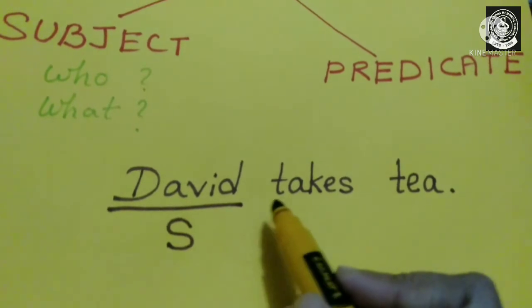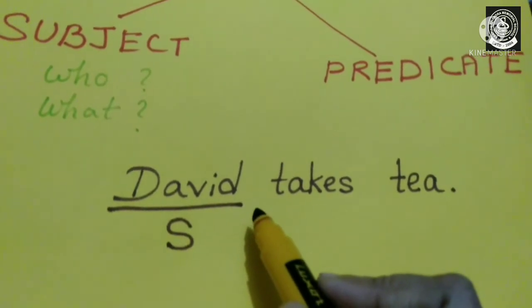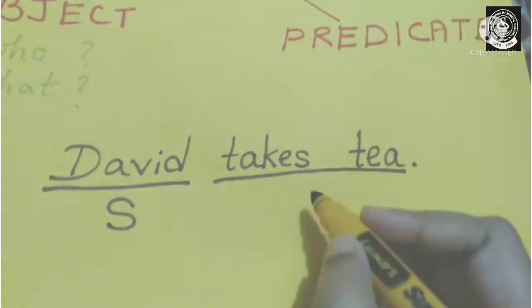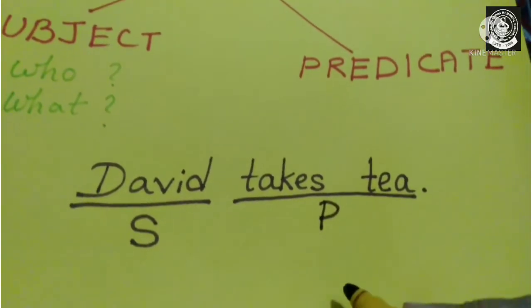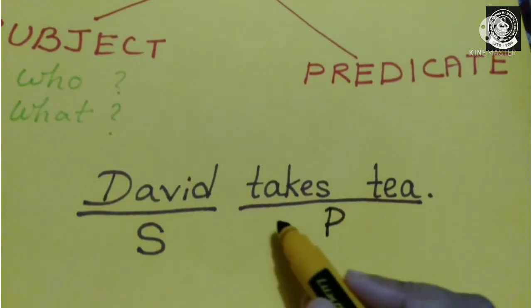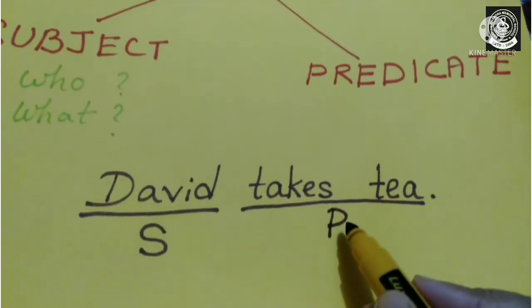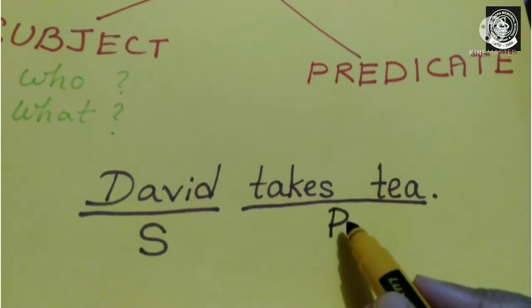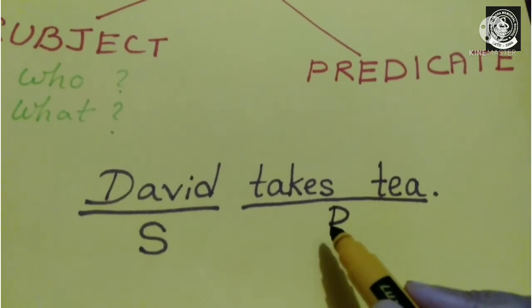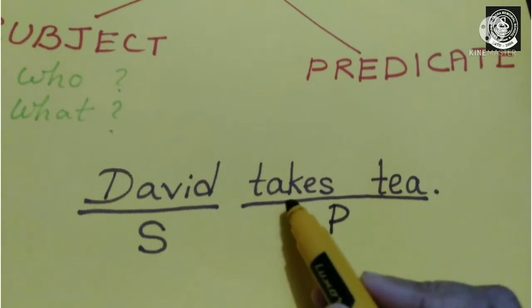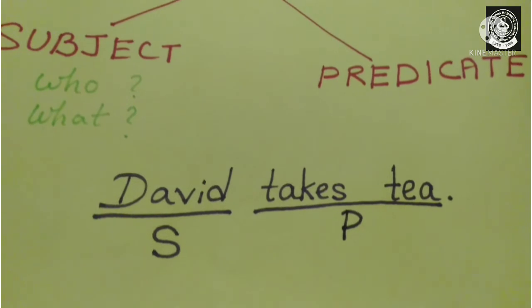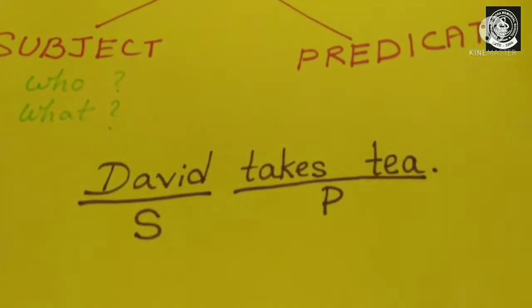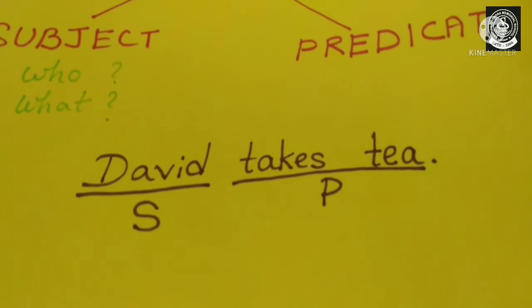Rest of the part, whatever David is doing is your predicate. Now remember children, the predicate always carries a verb. There is always a verb in the predicate and here your verb is takes. Let me remind you that verb means doing word or action word.